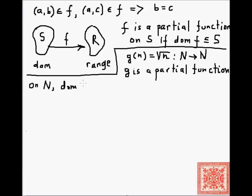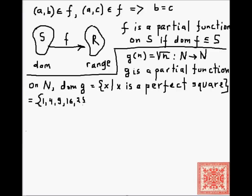Because the domain of g is the set of perfect squares, so numbers x such that x is a perfect square. So what's a perfect square? It's numbers such as 1 and 4 and 9 and 16 and 25 and so forth.